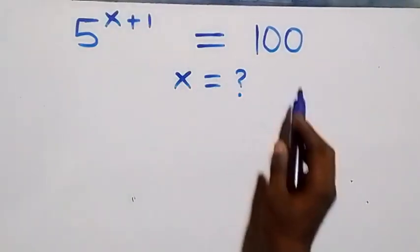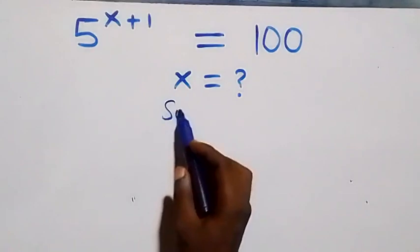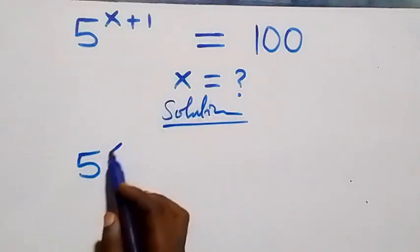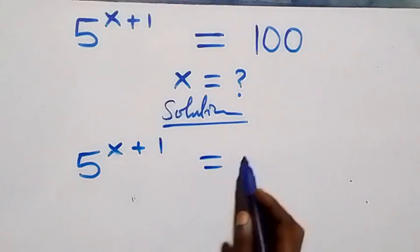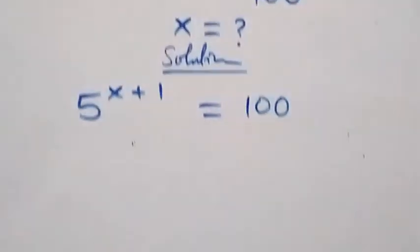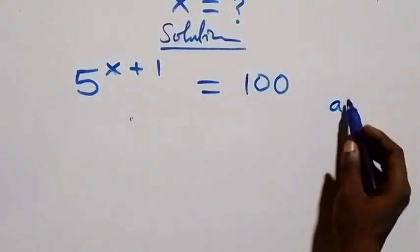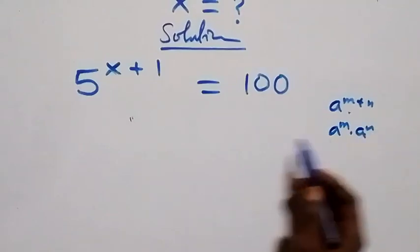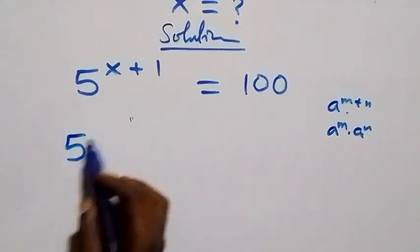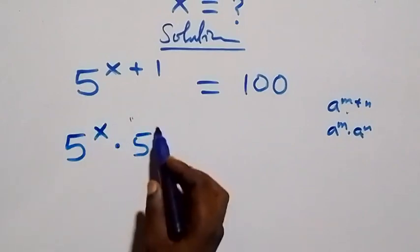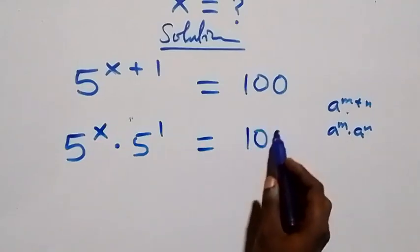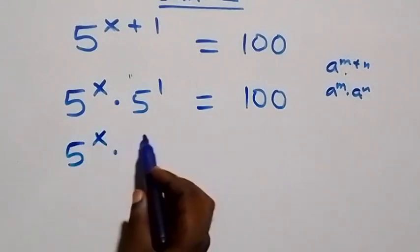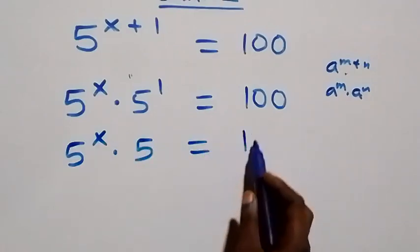Hello, you are welcome. How to solve this nice exponential equation. What we have here is 5 raised to power x plus 1 equals 100. This follows from when we have a raised to power m plus n, which is the same as a raised to power m times a raised to power n. So we can write this as 5 raised to power x times 5 raised to power 1 equals 100.